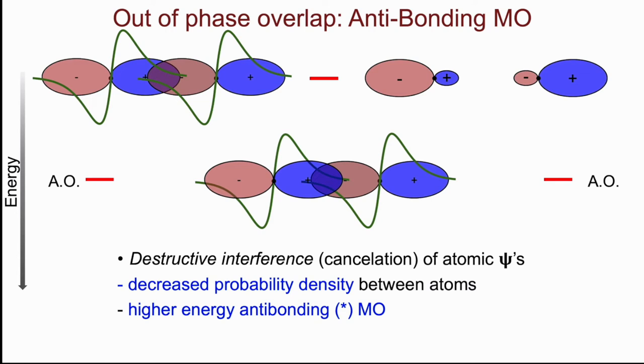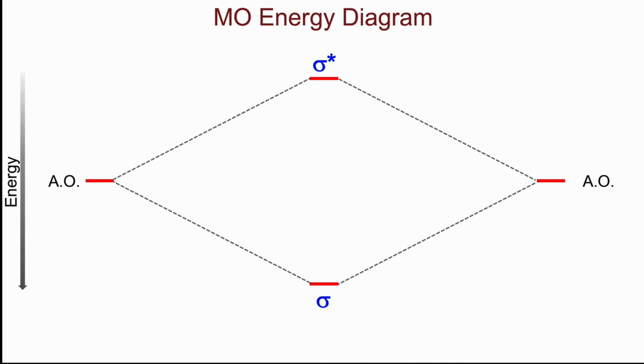Here is a molecular orbital energy diagram highlighting the energetic effects of what we just described. On the left and right, we show the energies of the constituent atomic orbitals. Here I've shown these two orbitals being at the same energy. From what we know of Z-effective, that means that these two atoms must be the same.